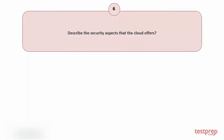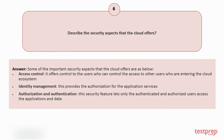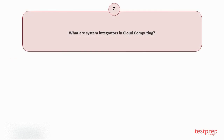Question number six: Describe the security aspects that the cloud offers. Some important security aspects are: one, access control — it offers control to users who can control access to others entering the cloud ecosystem; two, identity management — this provides authorization for application services; three, authorization and authentication — this lets only authenticated and authorized users access the applications and data.